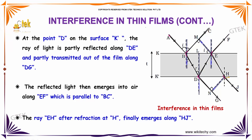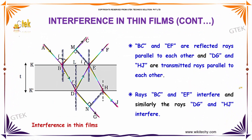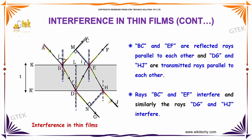The ray EH, after refraction at H, finally emerges along HJ. So some of the rays will get once again reflected by the surface k, giving EH and ejected as HJ. So BC and EF are reflected rays parallel to each other, and DG and HJ are transmitted rays parallel to each other.